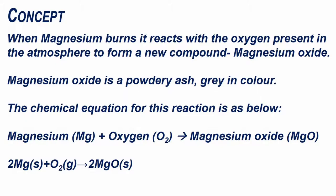The chemical equation for this reaction is as below. Magnesium plus oxygen gives magnesium oxide.